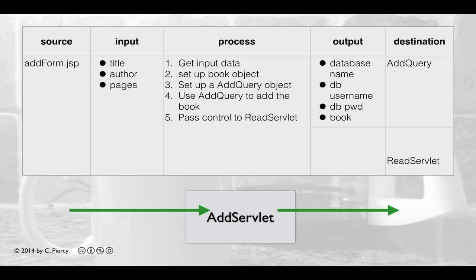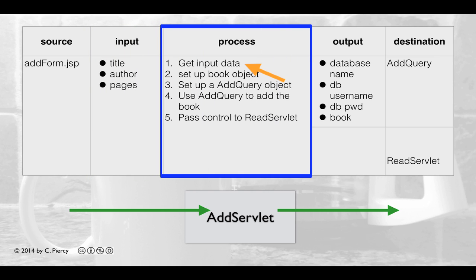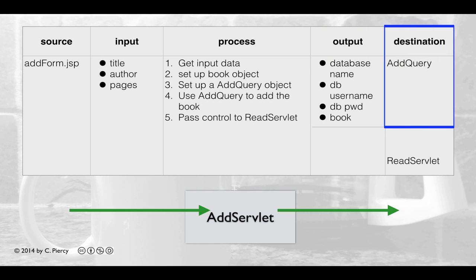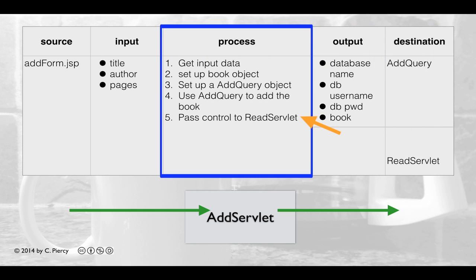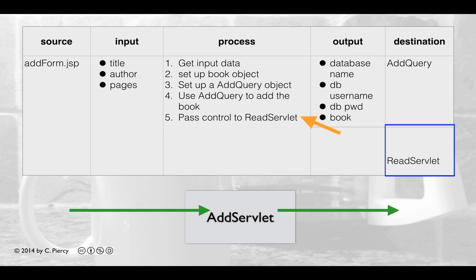Here we see the IPO for our AddServlet component. A request will come in from addform.jsp providing the title, author, and pages entered by the user. AddServlet will get this input data, set up a book object, set up an AddQuery object passing it the database name, username, and password along with the book, use AddQuery to add the book, and then pass control on to the read servlet.